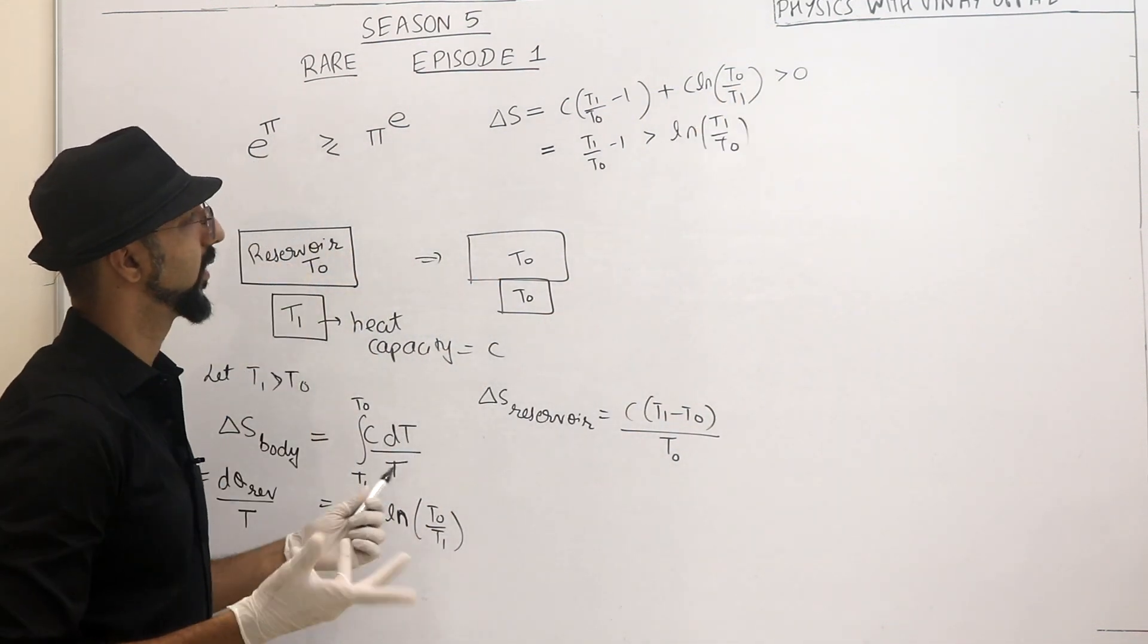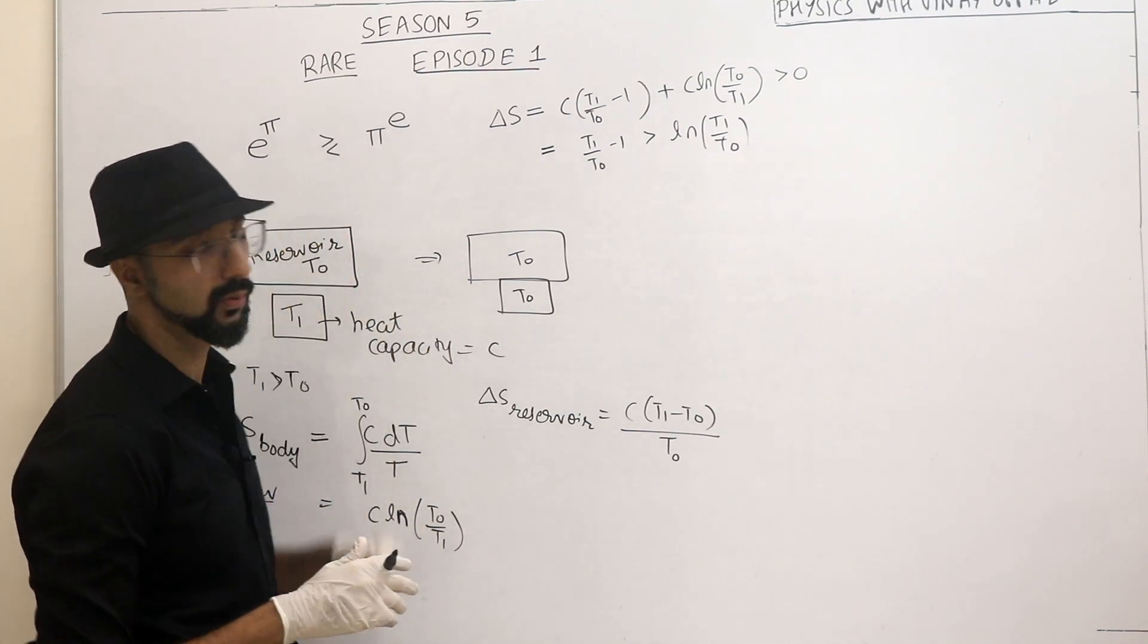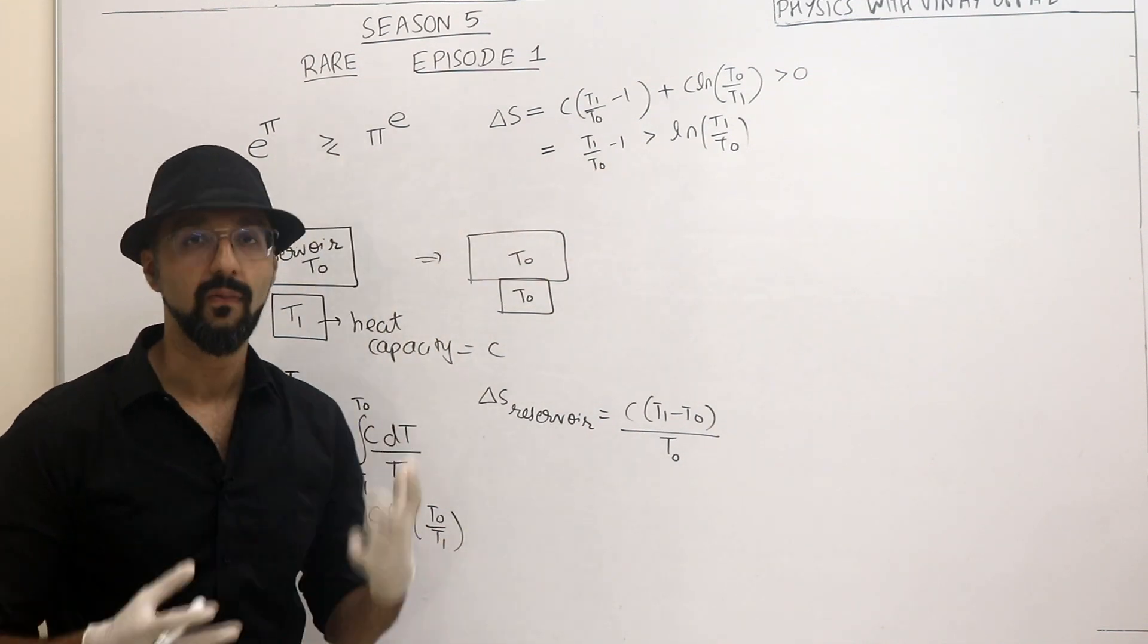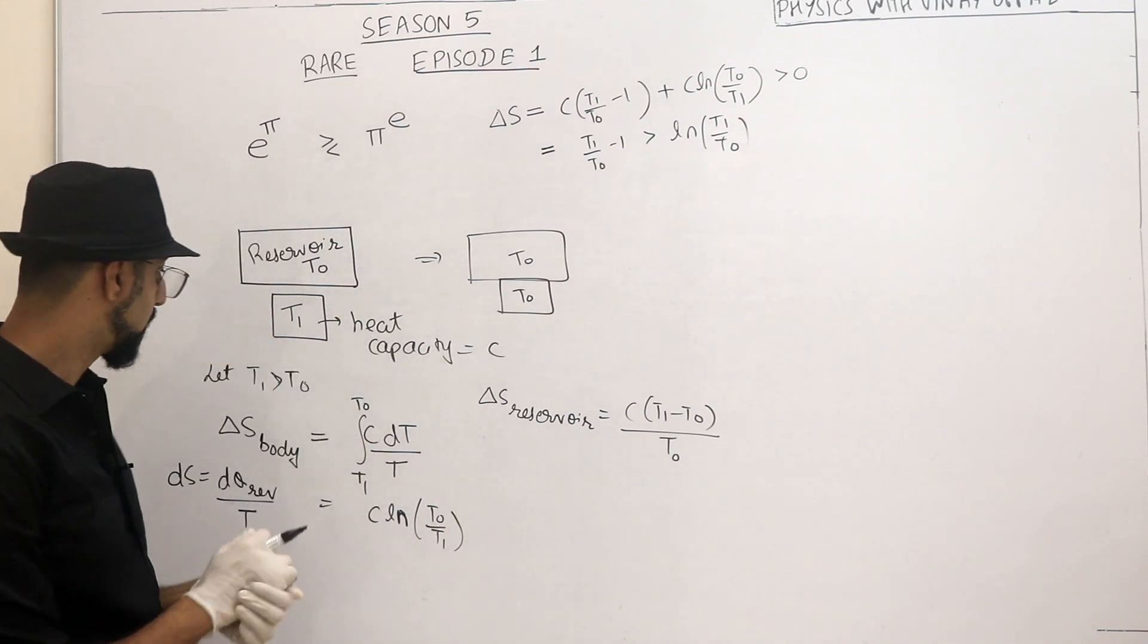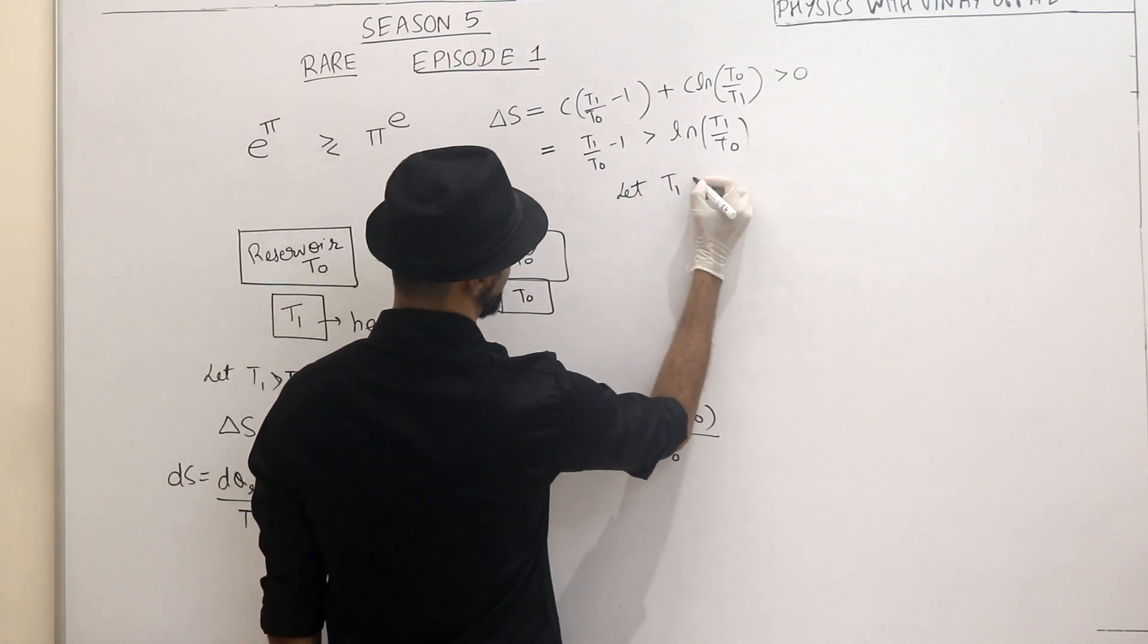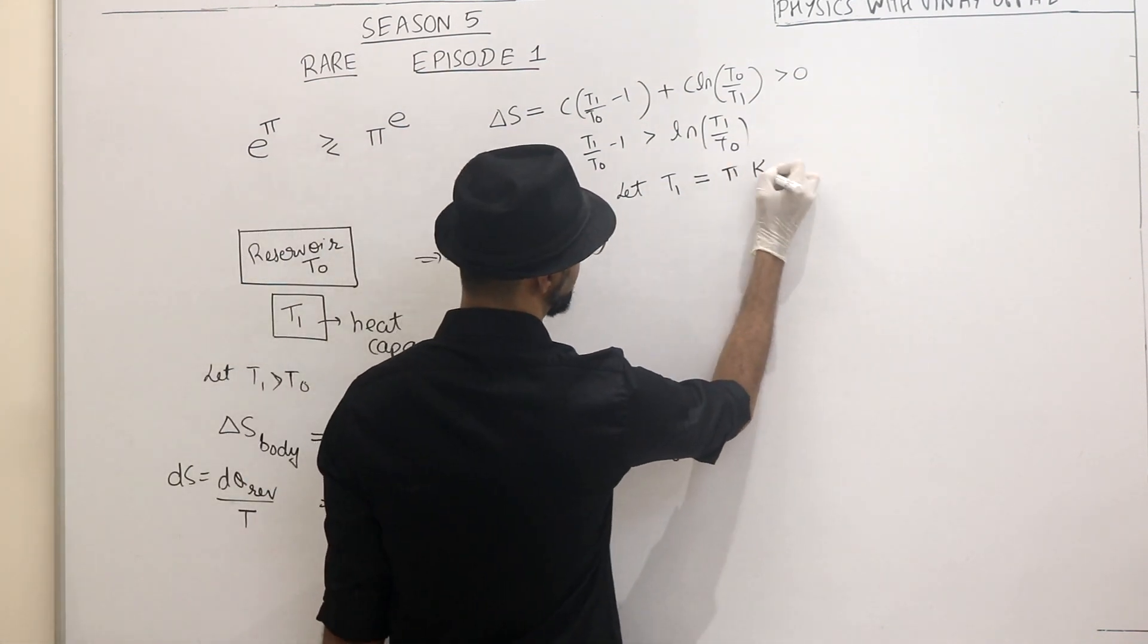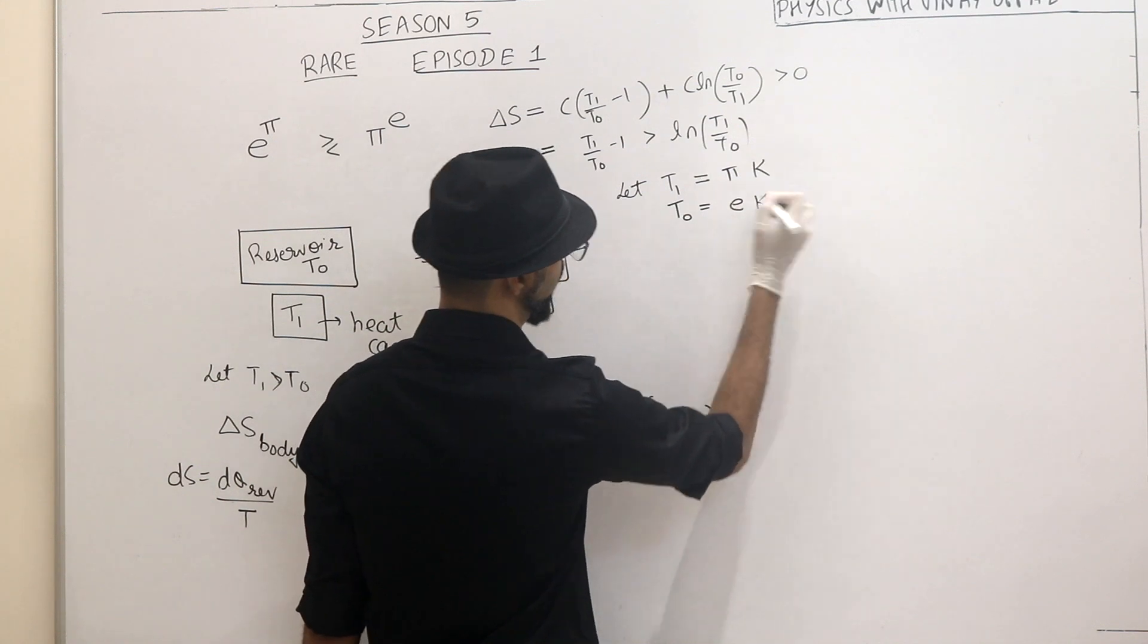Now you might wonder what are we even doing here using the second law of thermodynamics where we have to actually prove this or figure out which number is greater. So here I have an inequality. I'm going to choose certain values of T1 and T0 which will help me out. So I chose T1 is greater than T0. Let me choose T1 is equal to, how big is it? Pi big or E big? Pi big. 3.14 something. So let me choose T1 is equal to Pi Kelvin. And T0 is equal to E Kelvin. Alright.